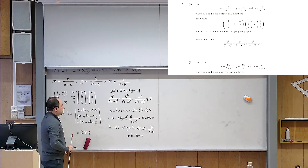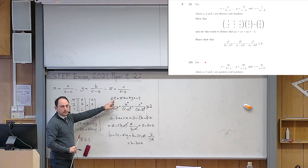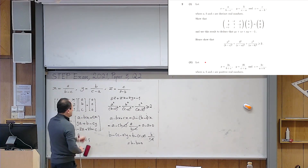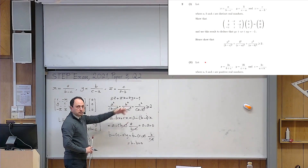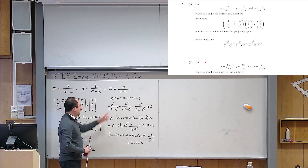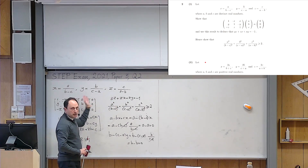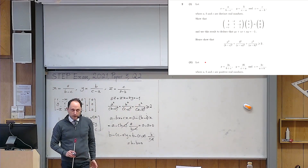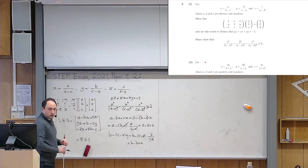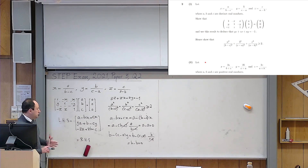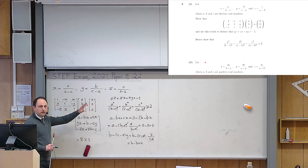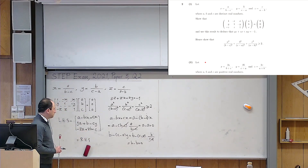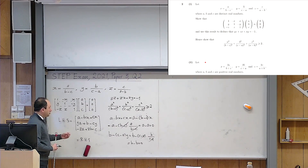Now I want to prove that yz plus zx plus xy equals minus 1. The STEP exam questions are very novel — the natural approach would be to substitute the fractions and do algebra, but the problem says to use the matrix result. So we need to reason using matrix theory.